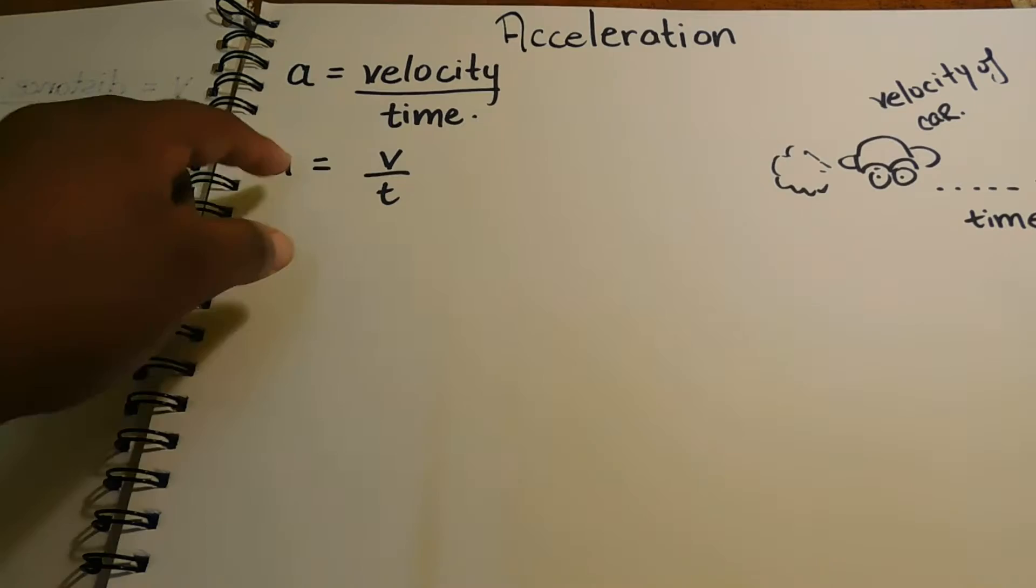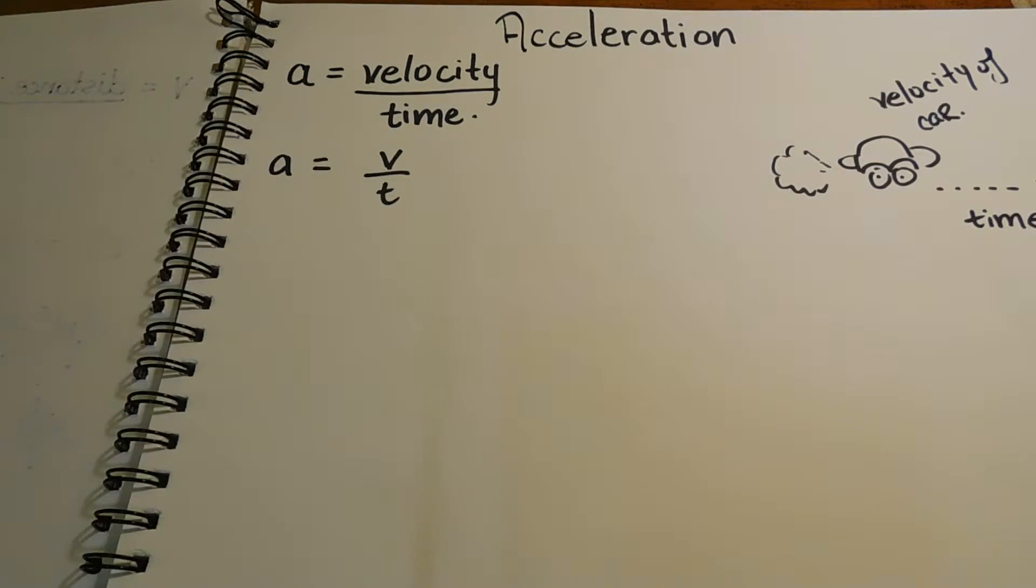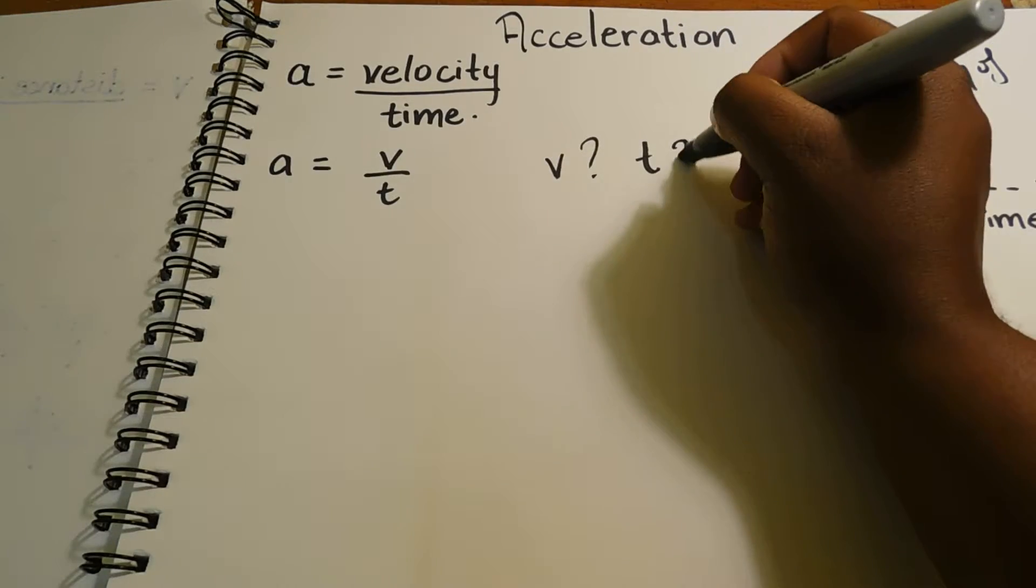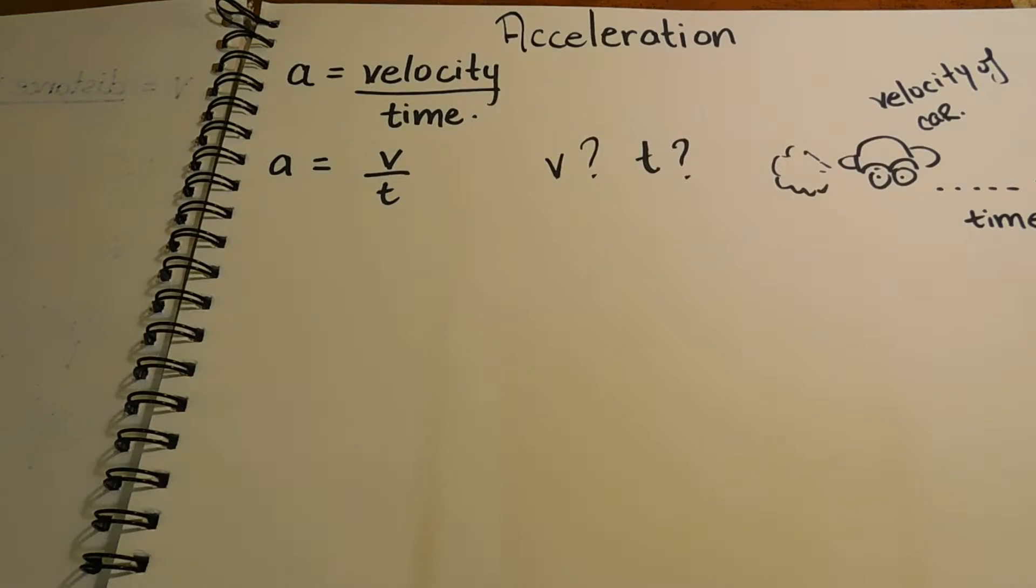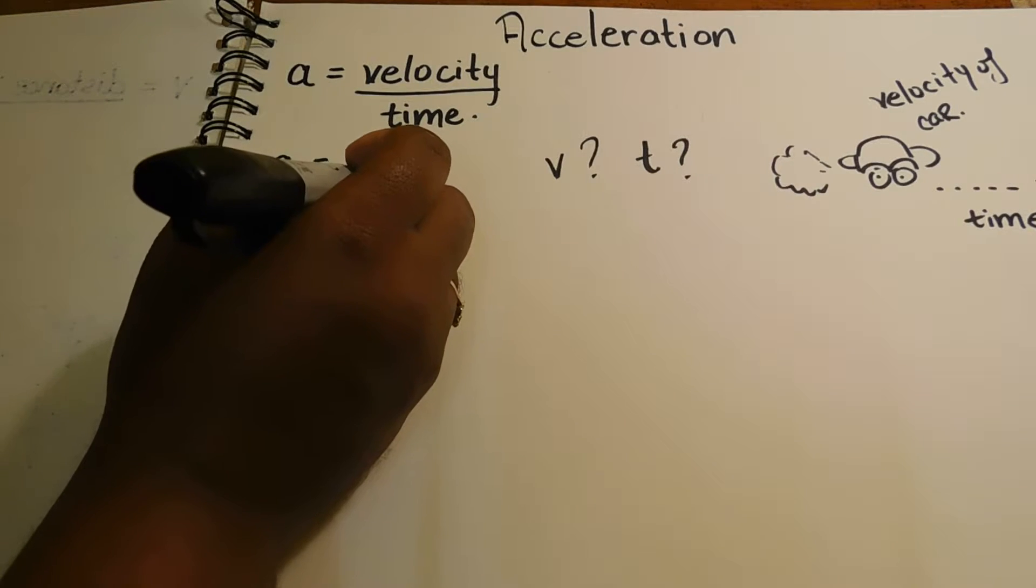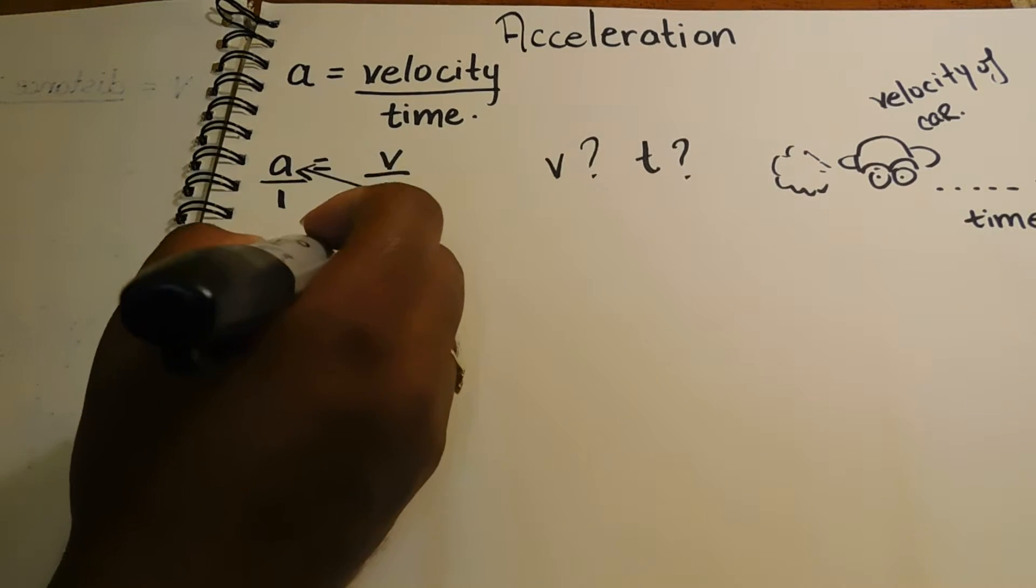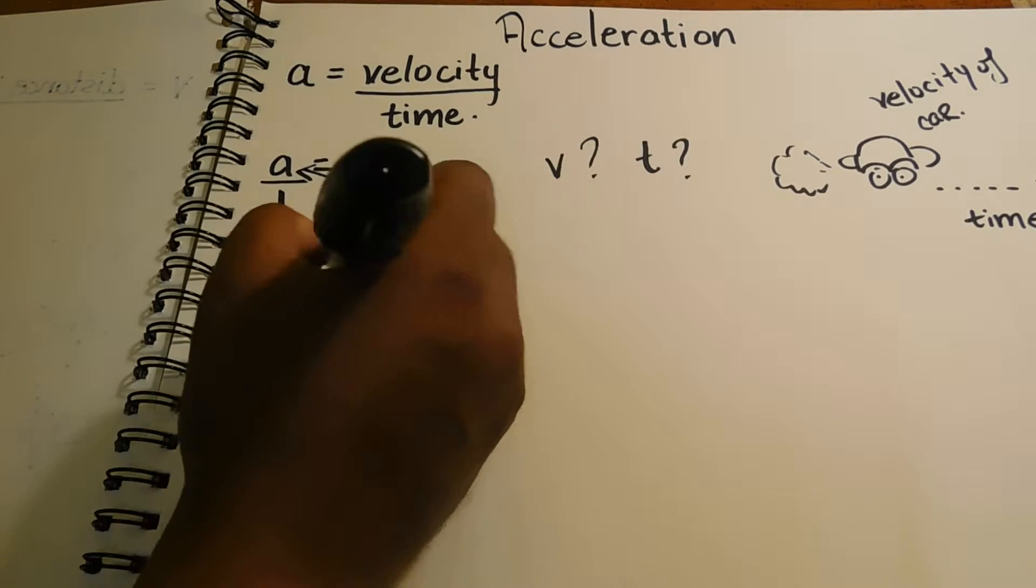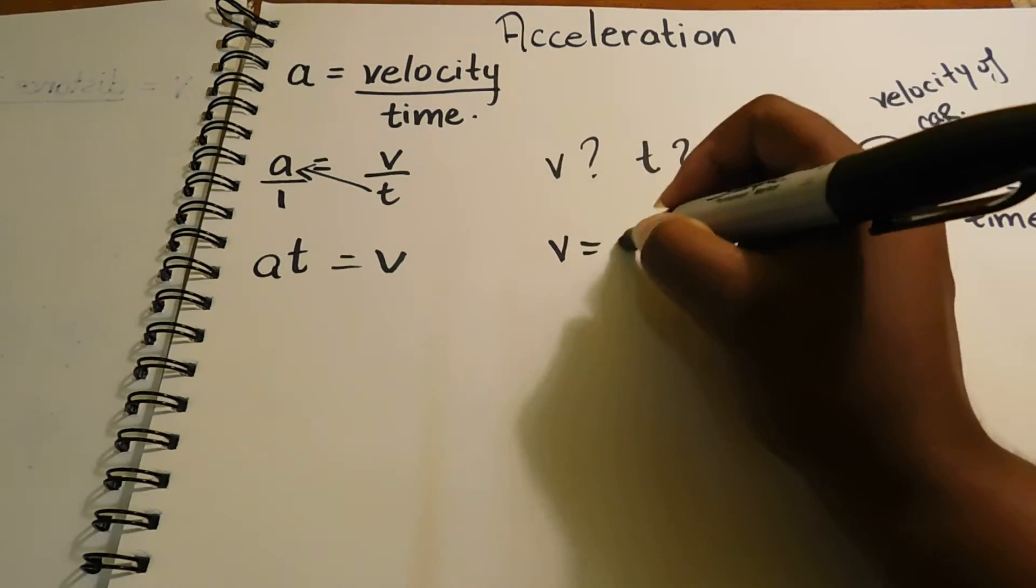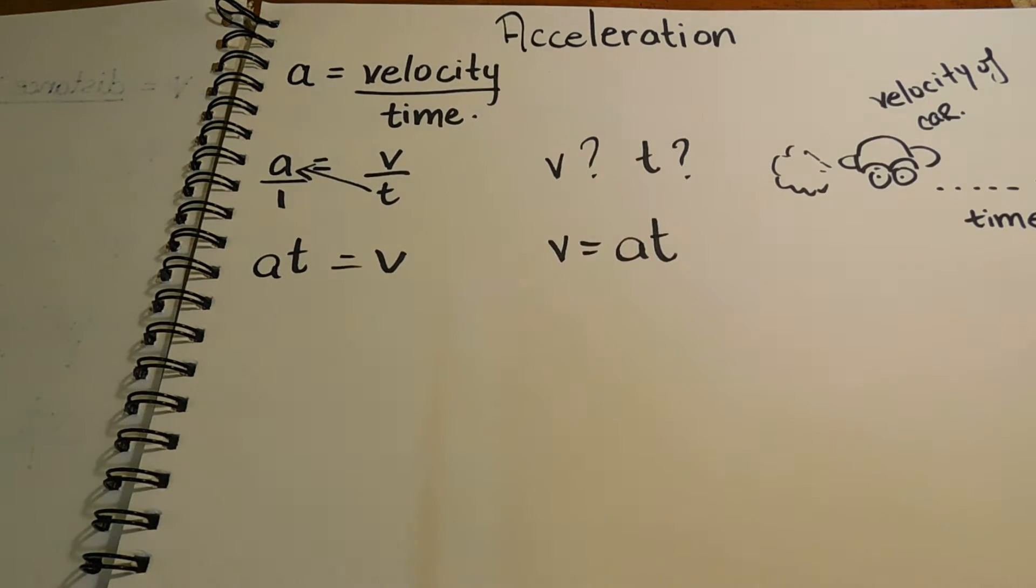Right? And so if a is equal to v over t, suppose you're looking for v, or we're looking for t. How do we do that? We've been doing it all along, and so this should be easy now. You put a over 1, right? And you would transpose. You'd be left with a t equal to v. And voila! Therefore, v is equal to acceleration times time.